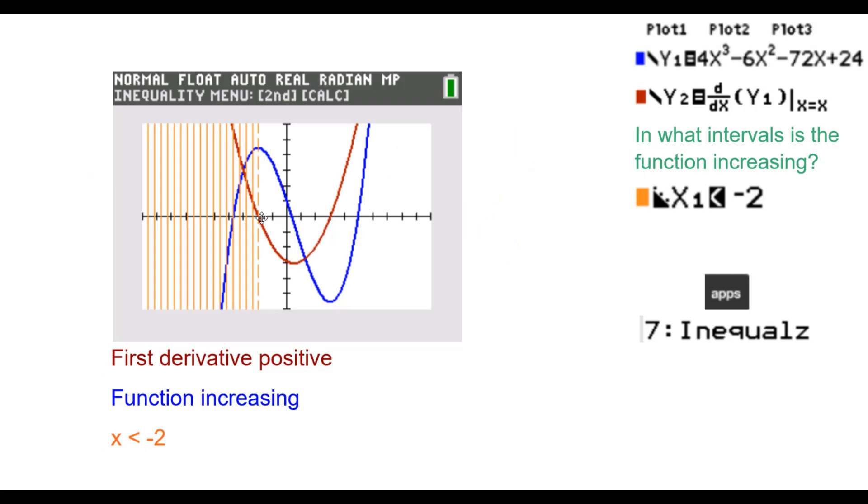So here we can see the first derivative is positive in this interval. The graph is all above the x-axis. We can also see that the function is increasing in that interval.